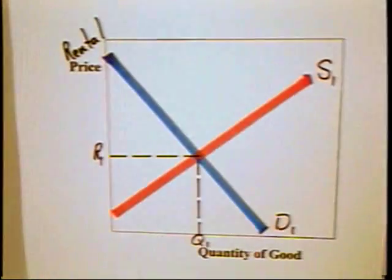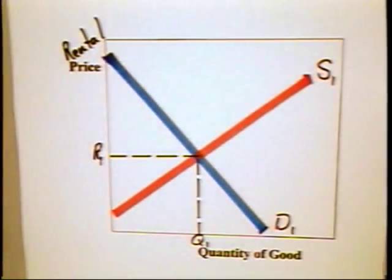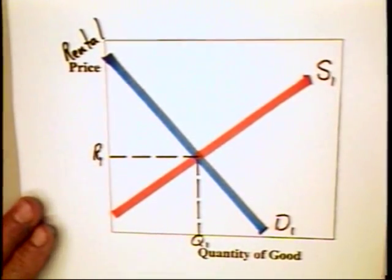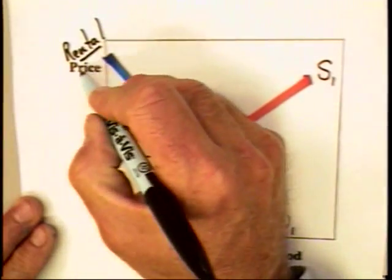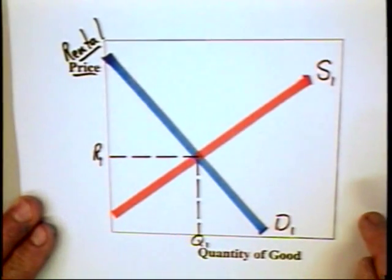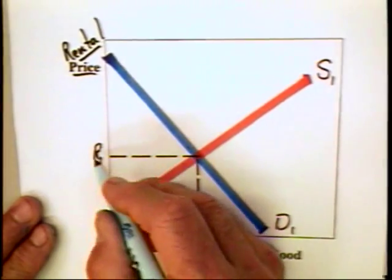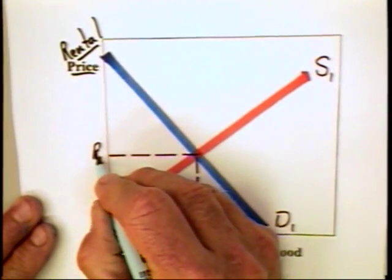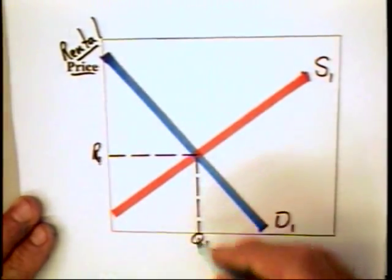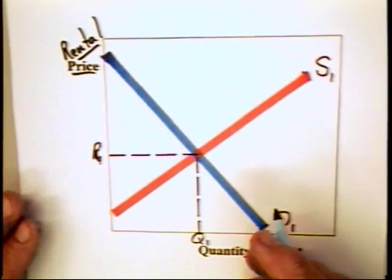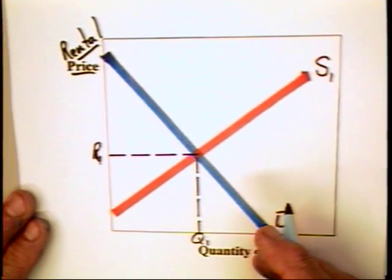In order to analyze the impact of rent controls, we can turn to a standard supply and demand curve graph like the one I have here. I've just simply altered the basic diagram to include the price as the rental price or the rental payment. The equilibrium price in this market or rent in this market is R1. The quantity of apartments available is going to be Q1.